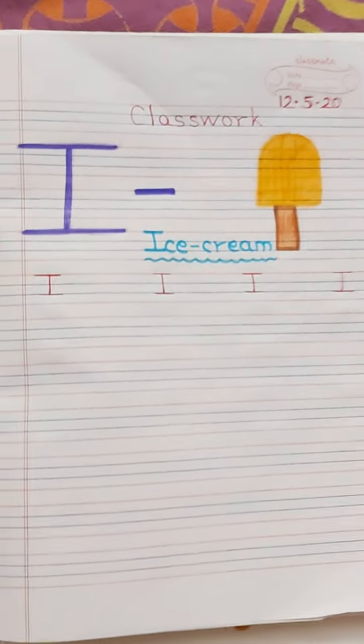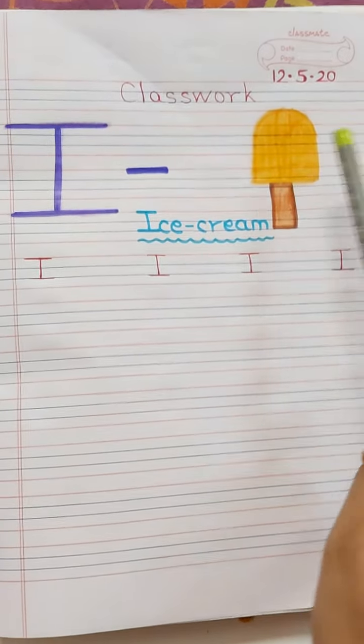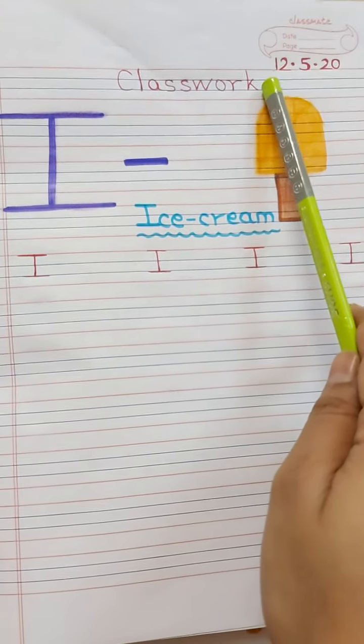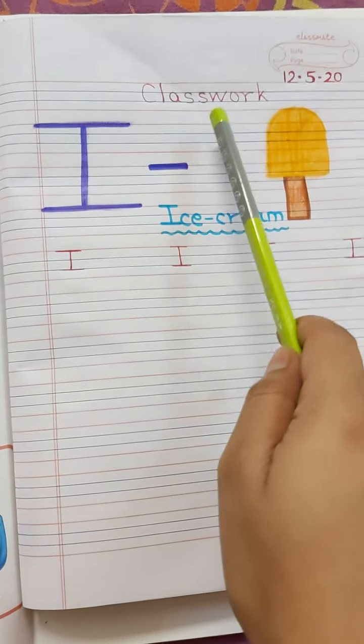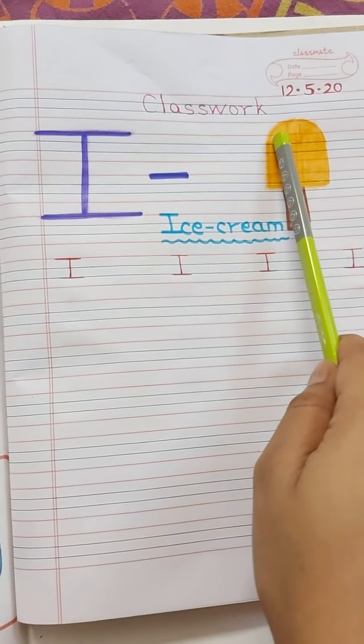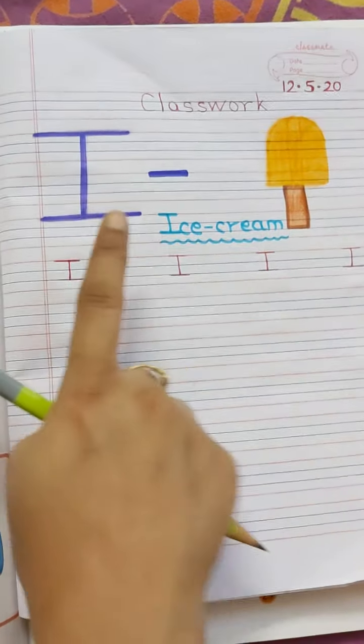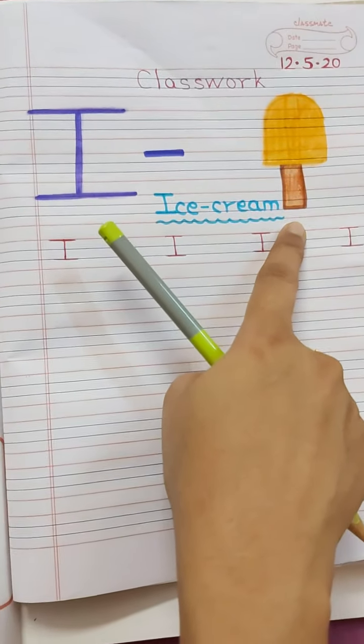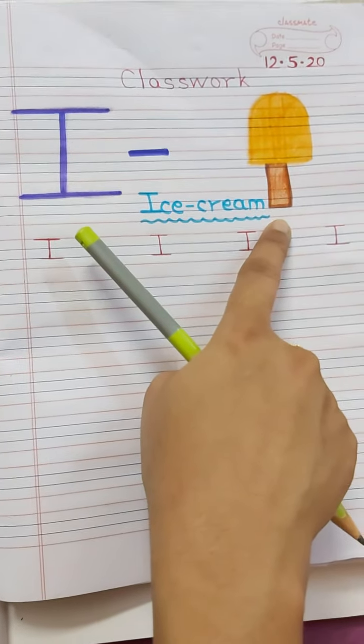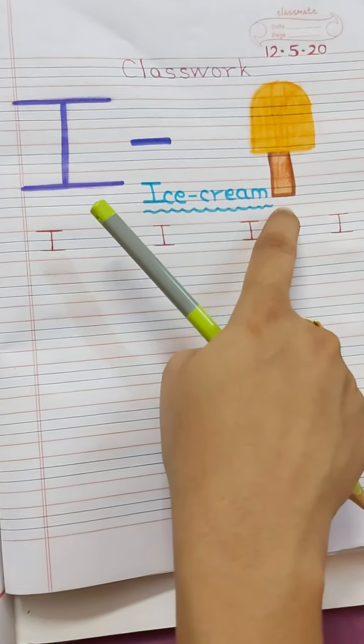Now, look here how you have to do the classwork. Dear parents, please write today's date, that is 12.5.20 and classwork. Then, capital I dash ice cream. You have to make the picture of the ice cream. Ice cream ki picture aap loog bana di chayega.